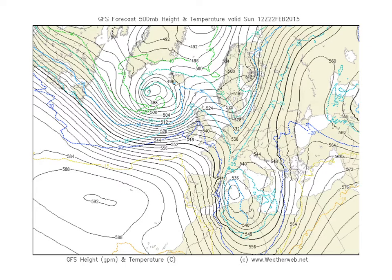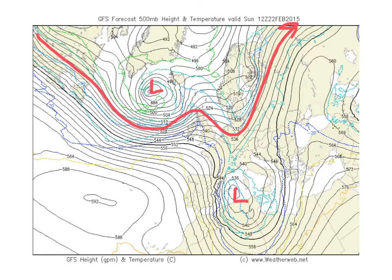Now we'll stick with the 500 millibar chart because it's interesting to see how this develops over the coming days. That's Sunday, and the jet stream is blowing through here on Sunday. We've got a low in the heights here and also a low in the Mediterranean. What's going on is that the low in the med is being fed by cooler air from the north, while the ridge here is being fed by warmer air coming up from the tropics.